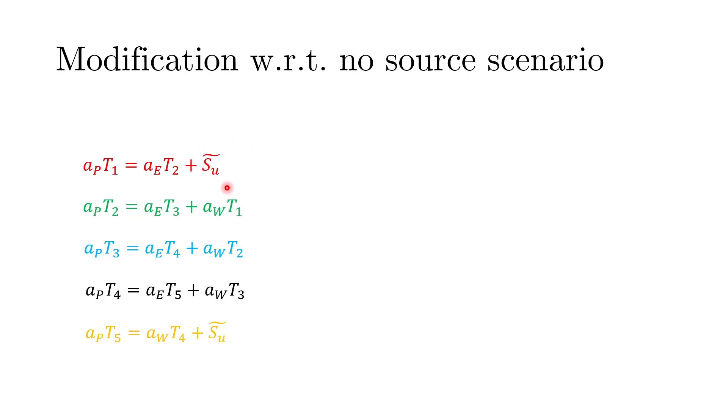Now if I convert these equations from a no source scenario to the scenario of a source we simply add an extra SU in all these equations. This is for even for the case where we have a constant source or a non-constant source. All these equations they would have an extra SU and that is the only difference when it compares to the previous codes that we have looked. So what we have to do is we have to add this SU in all those coefficients that we had obtained in the last matrix formulation system. Let me go to MATLAB and show you what happens in the code.